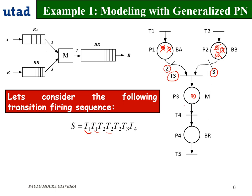When the machine finishes, we fire T4: this token leaves P3 and a token is deposited in buffer BR. When the part leaves the system and T5 is fired, the token is withdrawn from buffer BR. This corresponds to firing this sequence of transitions.